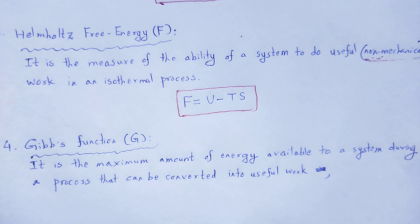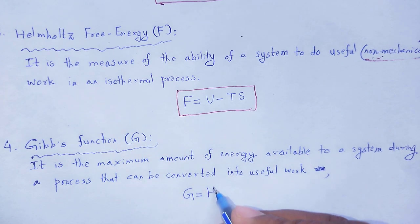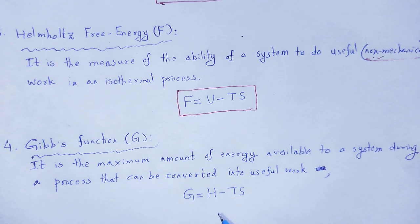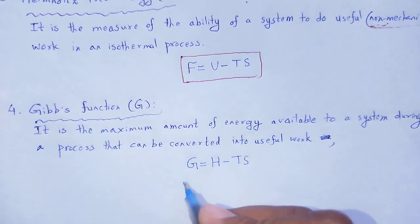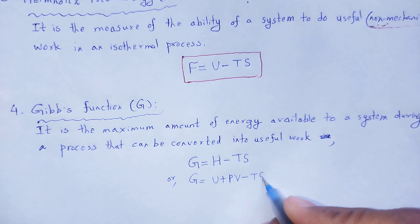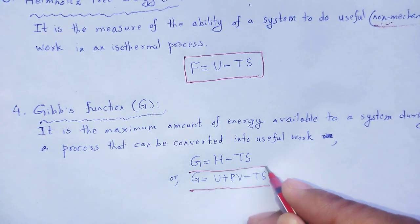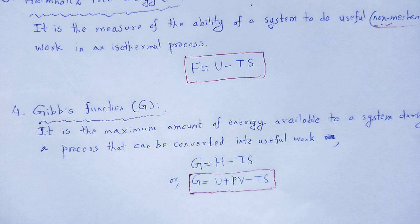Next, the Gibbs function. The Gibbs function signifies the maximum amount of energy available to a system during a process that can be converted into useful non-mechanical work. Mathematically, G equals enthalpy S minus TS, and substituting the value of enthalpy, G equals U plus PV minus TS. The Gibbs function physically signifies the maximum amount of energy available to a system that can be converted into useful work.